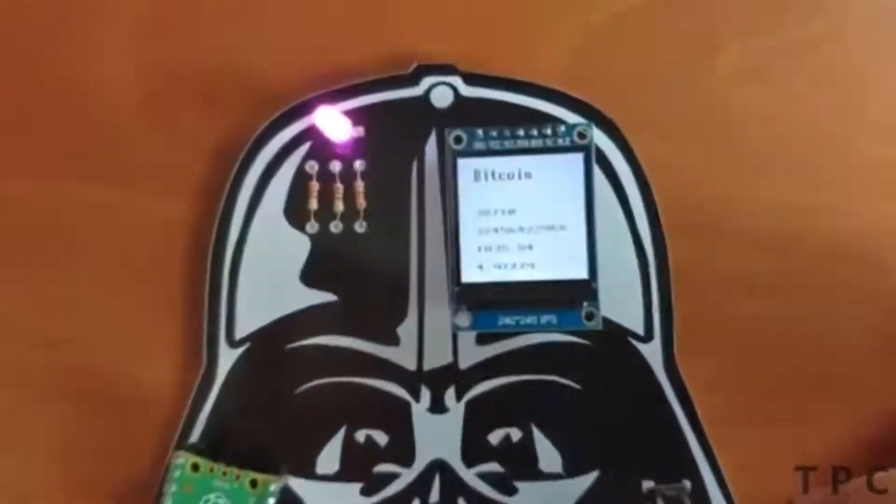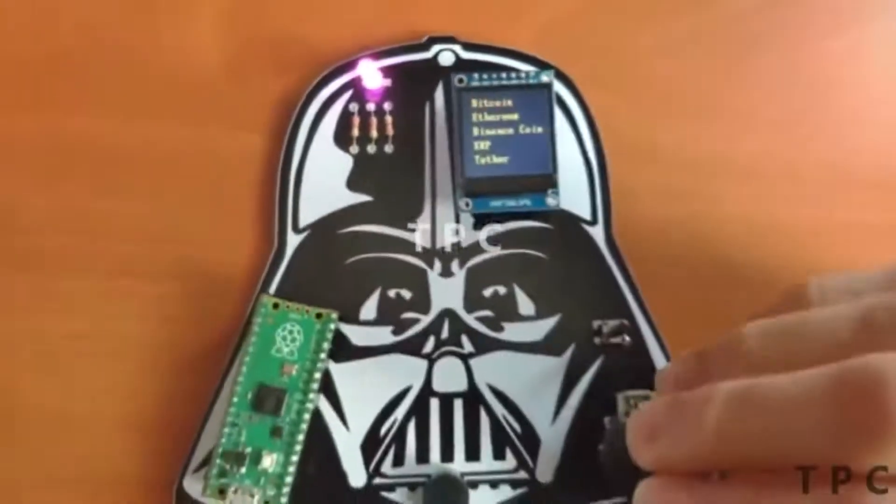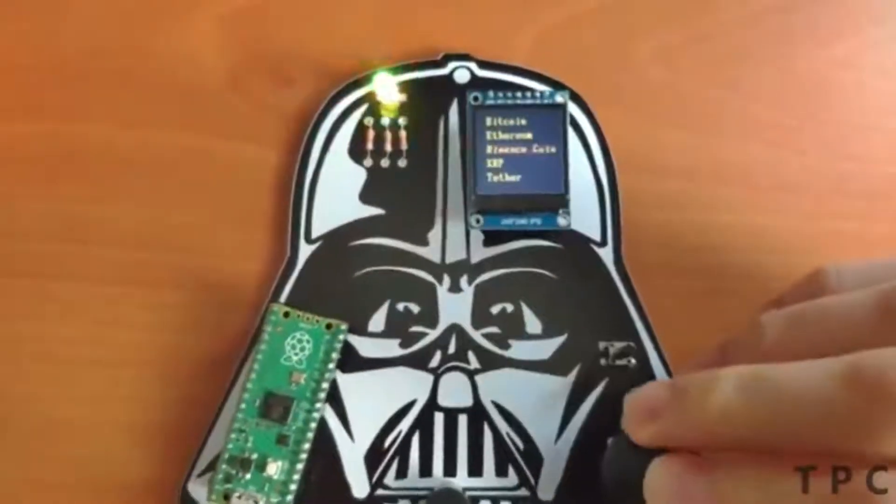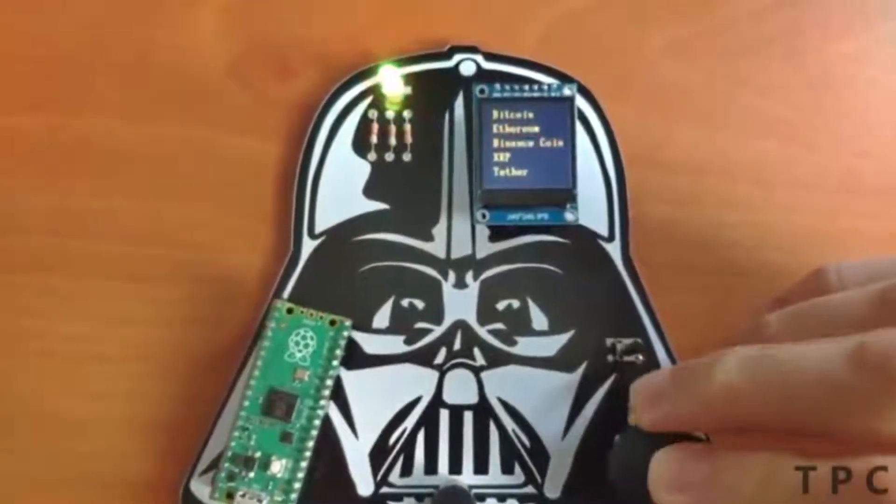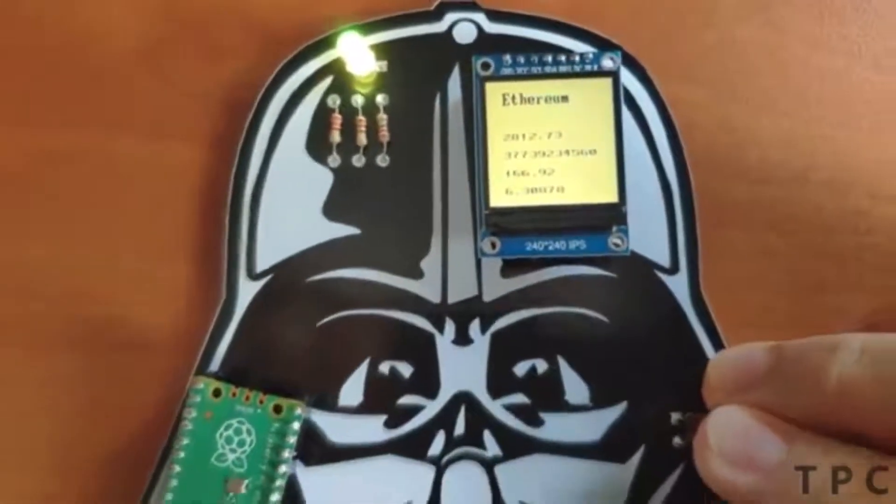With a joystick you can toggle between five different cryptocurrencies. Selecting a particular cryptocurrency gives you the information on current price, total volume, price change in the last 24 hours, and the percentage change in USD in 24 hours.